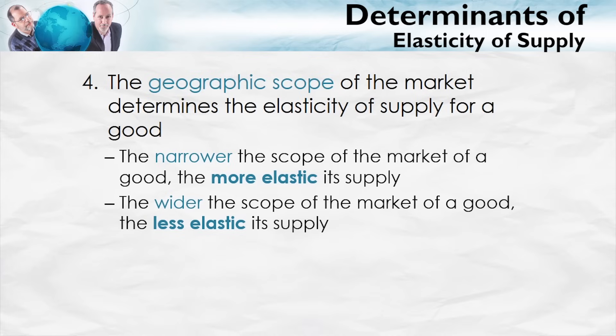On the other hand, if the worldwide demand for gasoline went up — say because China and India are becoming richer and buying more automobiles — we're going to have to dig for more oil, which is going to be much more expensive. It's much more difficult to increase the global supply of gasoline than to increase the supply of gasoline to Washington, D.C. Both of these reflect the fundamental idea: does an increase in supply require a big increase in the cost of producing the good?